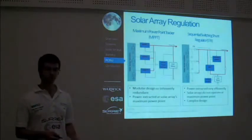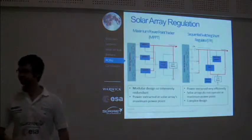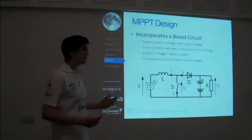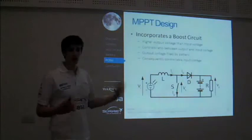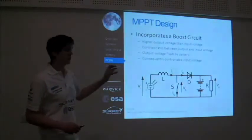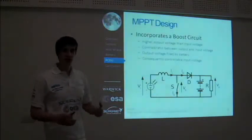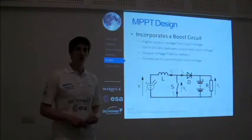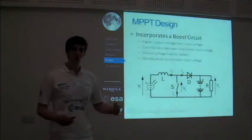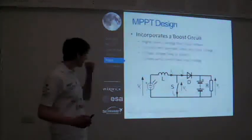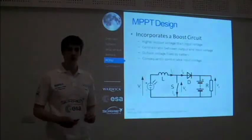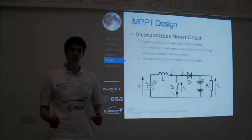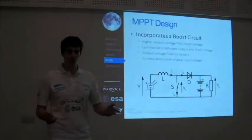I'll now pass it on to James, who will describe the work done in designing and prototyping an MPPT system. Once we decided to use the MPPT, we had to prototype it. Our MPPT circuit incorporates a boost DC-DC circuit, which produces a higher output voltage than the input voltage, and lets us control the ratio between output and input voltage by modifying the duty cycle on a power MOSFET in the circuit. Together with the battery fixing the output voltage, this means we can vary the input voltage and move around the solar array I-V characteristic to extract maximum power.